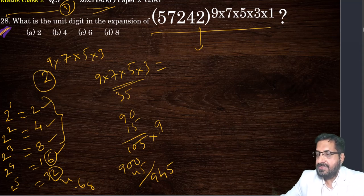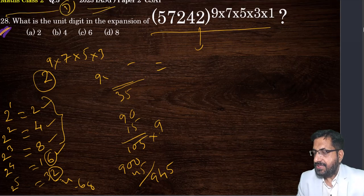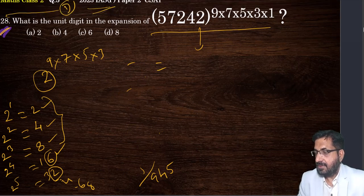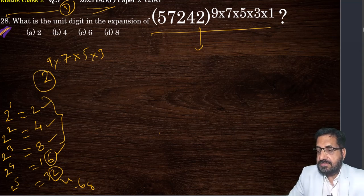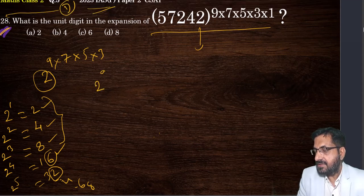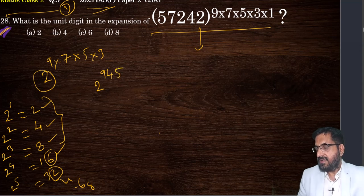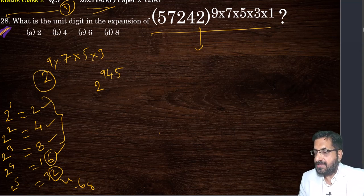You have to calculate what is 2 raised to 945. So 2 raised to 945 — how are you going to do that? 2 raised to 945 is time consuming, so you are not supposed to do that entire thing. See this pattern — every fourth step this pattern is repeating, so you have to divide this 945 by 4.